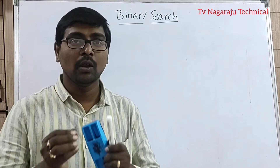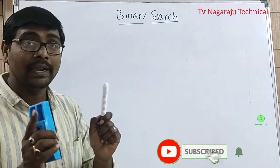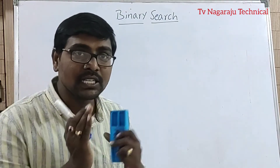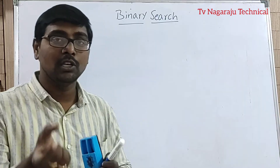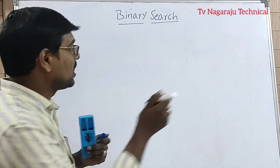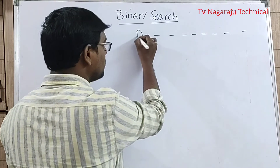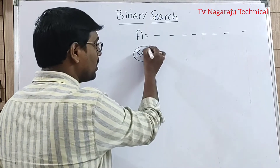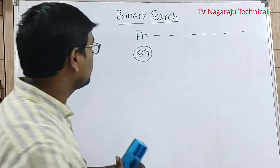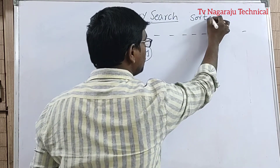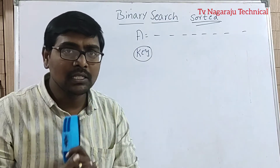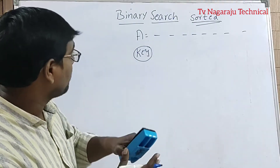Welcome to our channel. In this session we are going to discuss binary search under the divide and conquer technique. Simply, given a set of elements and a key, your aim is to check whether the key is present in the given set of elements or not. The very important thing is the list of elements must be in sorted order — remember this point.